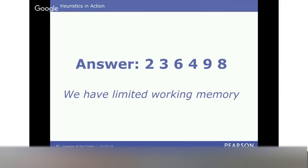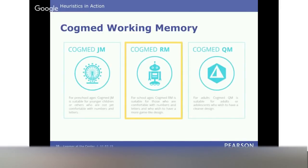The answer was 2, 3, 6, 4, 9, 8. The takeaway is we have limited working memory. That activity was actually from a program called Cogmed. There are three versions of Cogmed: JM for preschoolers, RM for school age, and QM for adults.